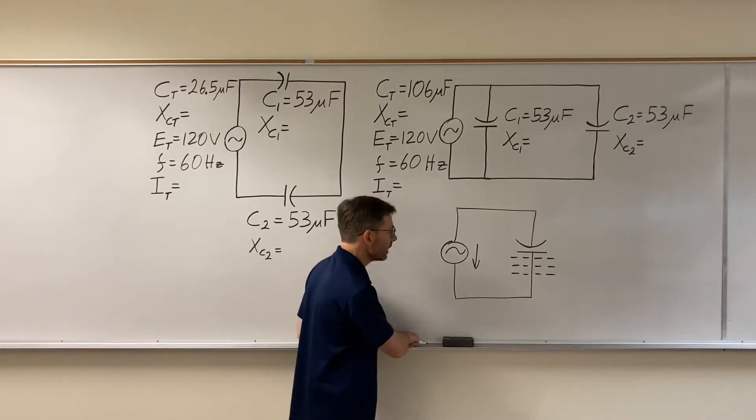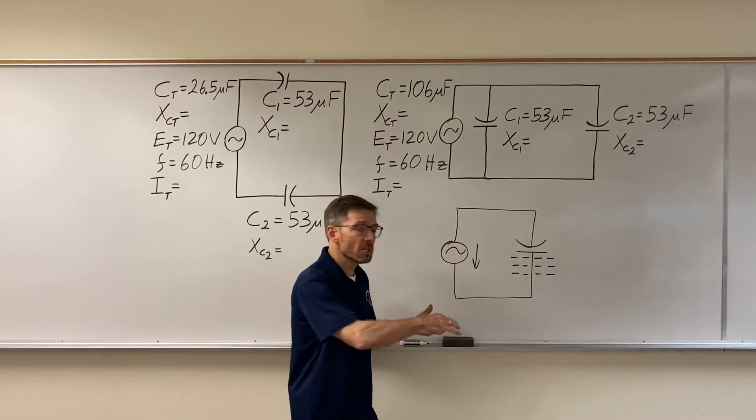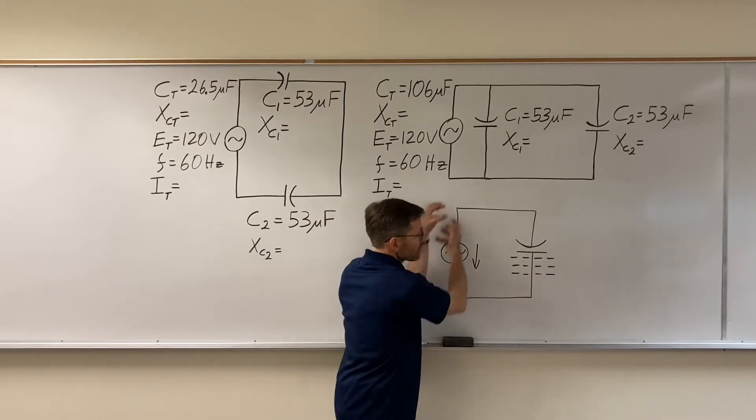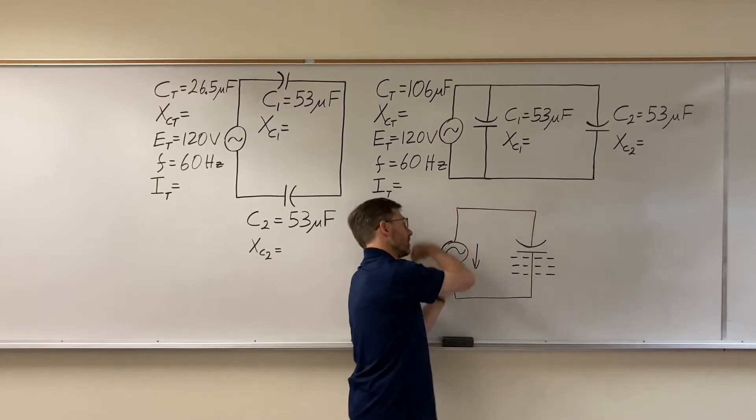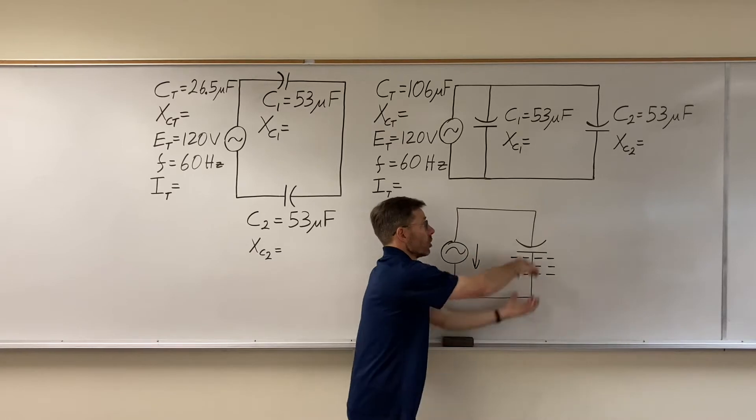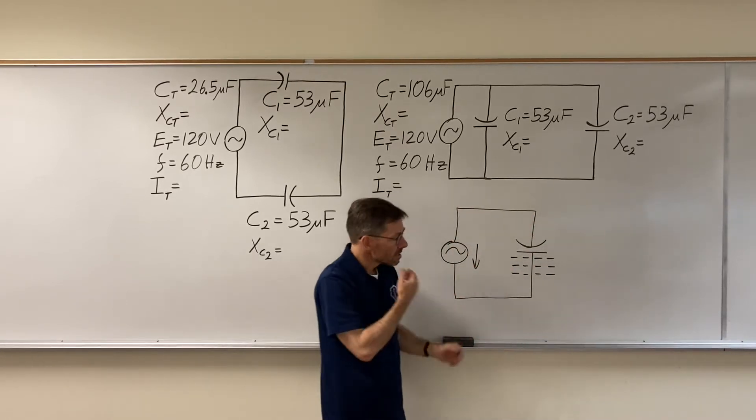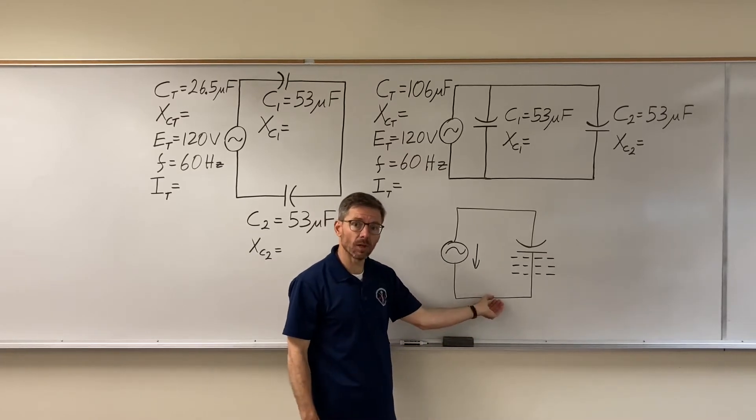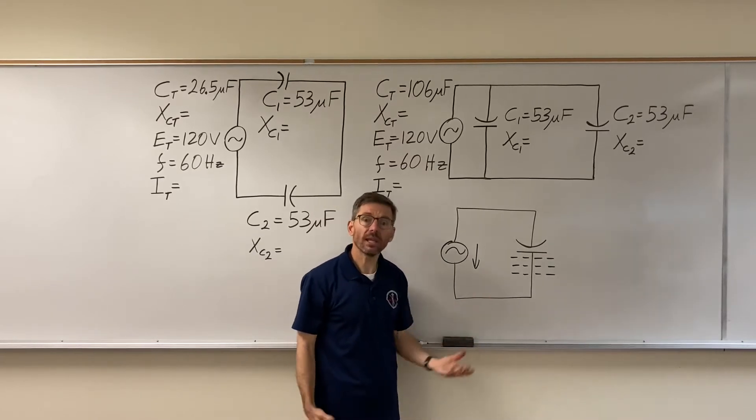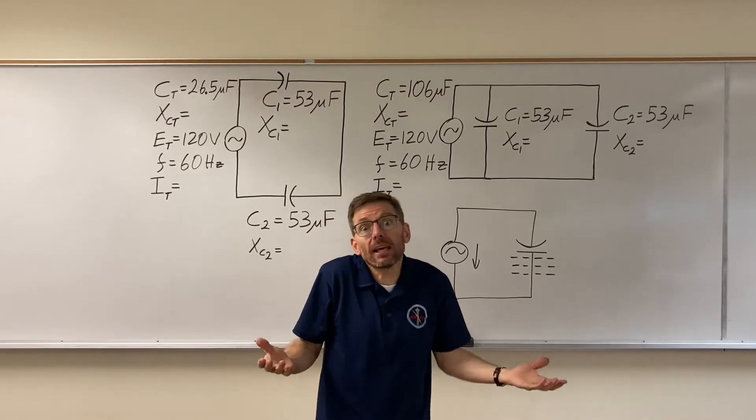So what happens while this AC voltage is applied is the electrons are racing from one side to the other and then turning around and coming back, packing their bags, going back to this side again. They're just going back and forward, back and forward. So if I put an ammeter on here, would I see current flow? Well yes, because what is current? Current is the movement of electrons.